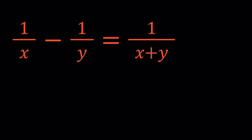Hello everyone. In this video we're going to be solving a rational equation. We have 1 over x minus 1 over y equals 1 over x plus y. We're going to be looking for x and y values. I'll be presenting two methods and at the end I'm going to show you a graph of this relation. First of all, notice that x cannot be 0, y cannot be 0, and x plus y cannot be 0.